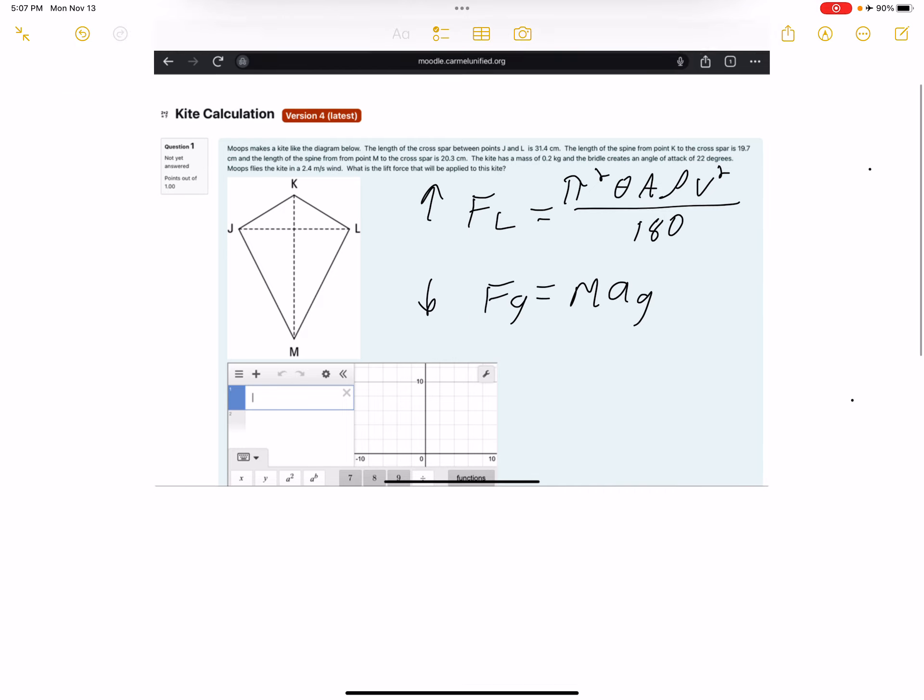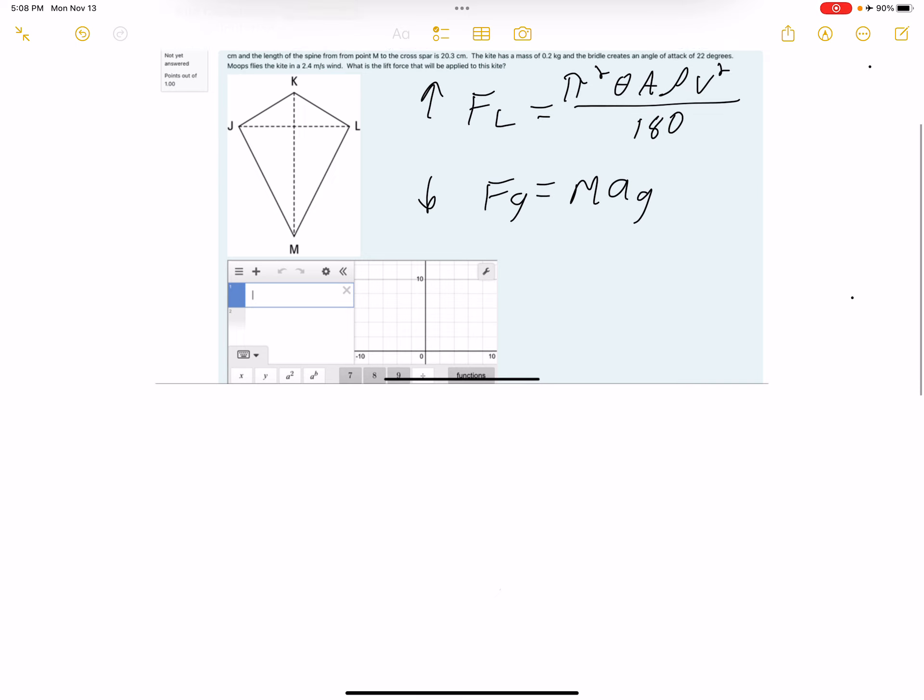So I'm going to rewrite it down here. Lift force is pi squared theta A, the density V squared over 180. Okay, so I'm going to write underneath, I'm going to start plugging numbers in. I like doing this just because it helps me stay organized. So that's pi.